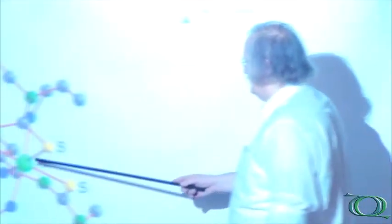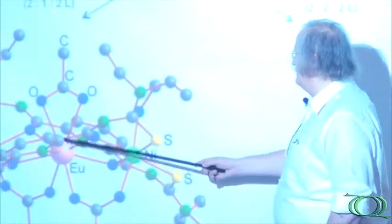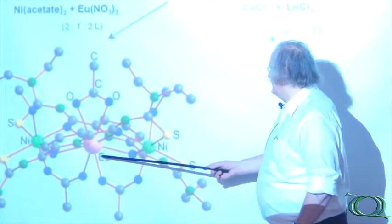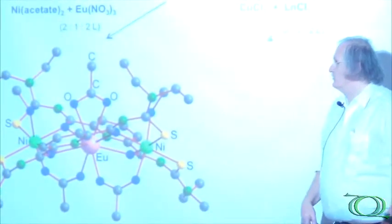This type of compounds we have prepared with a huge amount of lanthanides, and the structure is always the same. And here we see the role of the acetate. Two of them bridge, and one of them focus to the central lanthanide ion. In this case, it is europium.